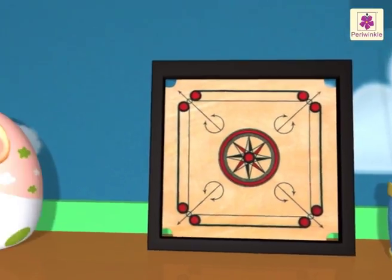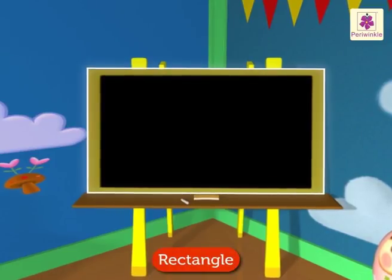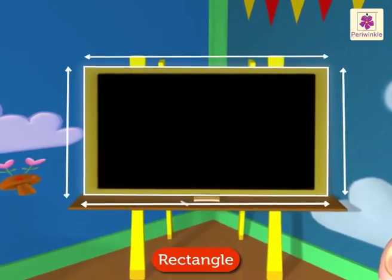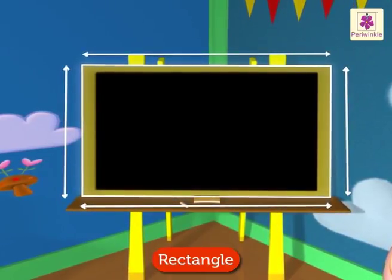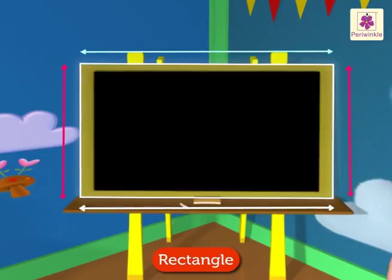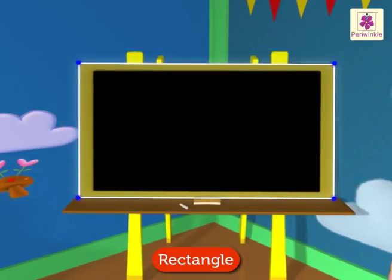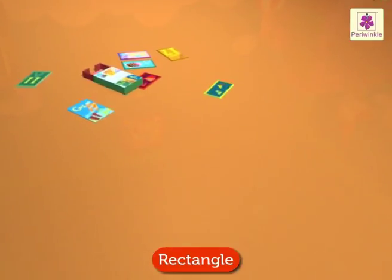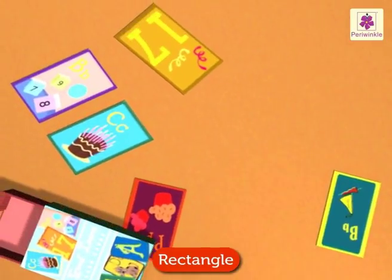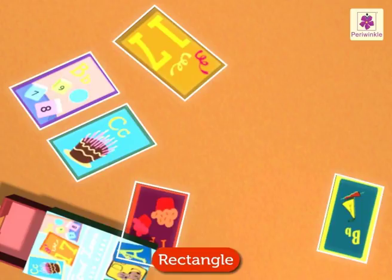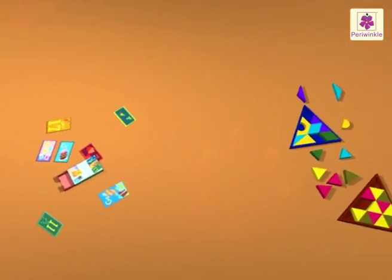Look at the blackboard — it is rectangle in shape. A rectangle is a four-sided figure; its opposite sides are equal. It has four vertices. Look at these colored flashcards; they are all rectangle in shape.